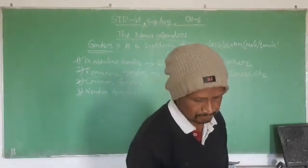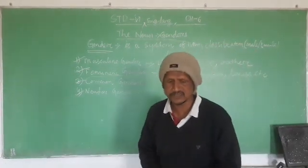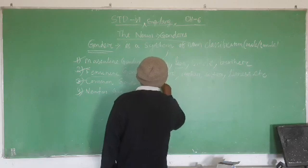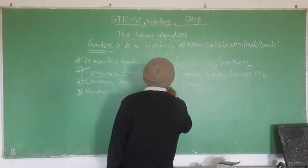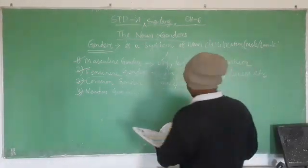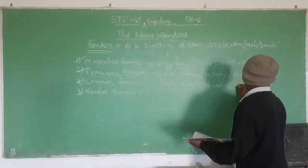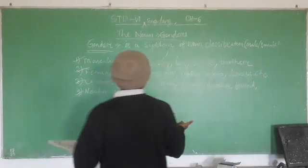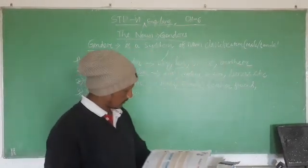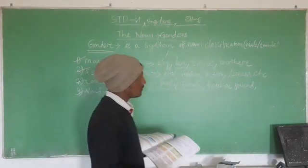Now we will discuss about the common gender. A noun that can be used for both male and female is known as common gender. Some examples are teacher — a teacher may be a male or female. Friend — it may also be male or female. Officer, servant, student, child — these are all common gender. Parent is also a common gender; a parent may be a mother or father.